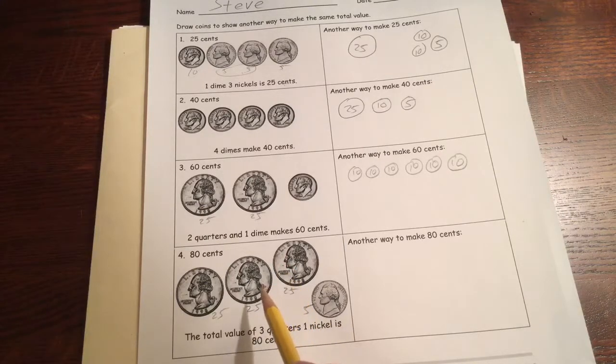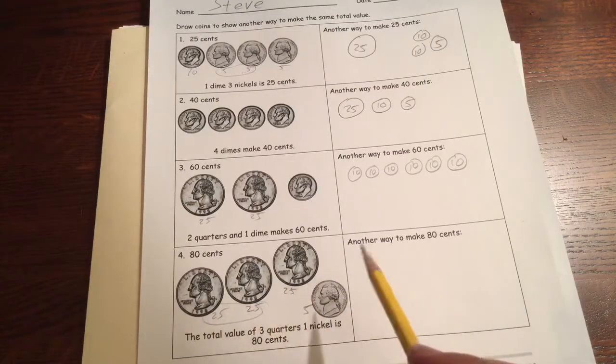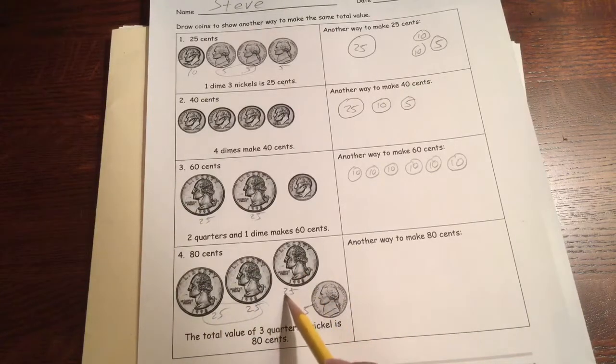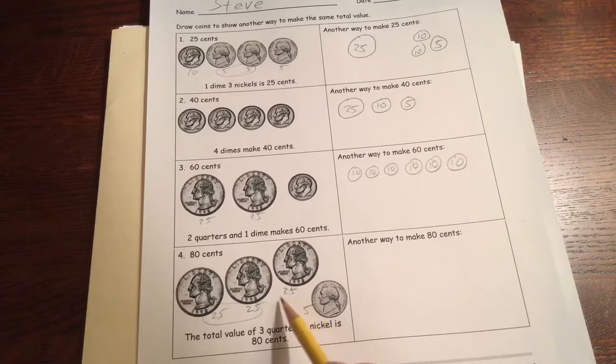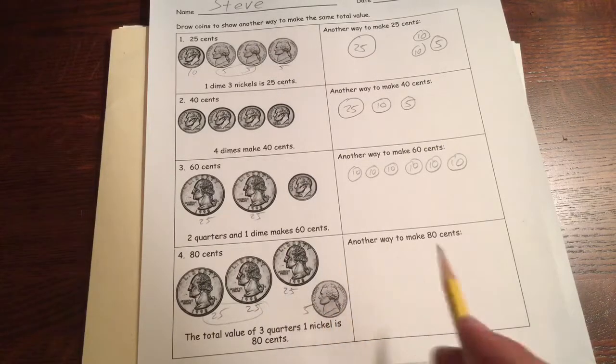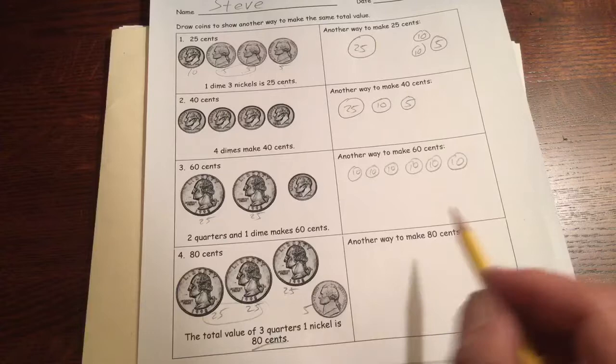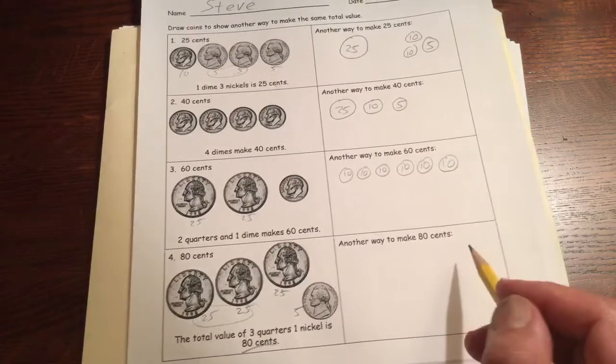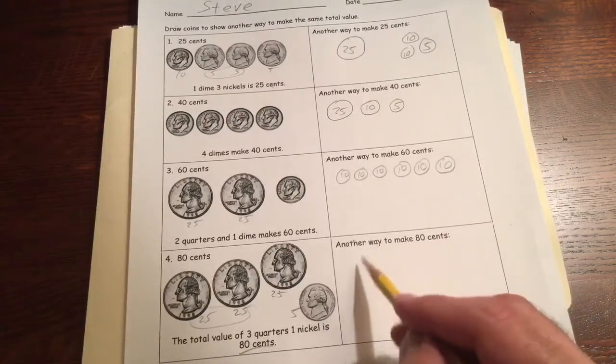You've got 50, and three of them makes 50 and 25. That's 75. Five more, 80. Right, because they told you that's 80. Another way to make 80 cents, you could do it like this.